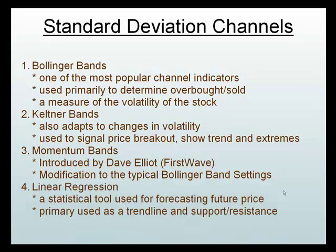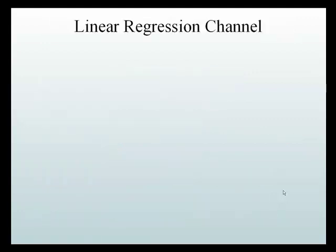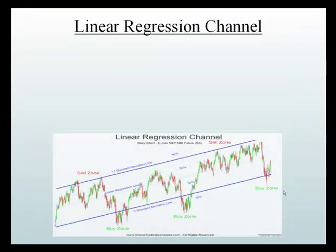The fourth type of standard deviation channel is a linear regression. Some might say, well isn't a linear regression channel just a straight channel? In a way it is, but since we're talking about standard deviation, this is a statistical tool focusing on forecasting future prices. As you look at our picture here, this is why you might ask why it's not in the straight channel section — but again it is a standard deviation channel, and you can see how we're looking for overvalued price when we hit the top of the line and oversold buying potential at the bottom.